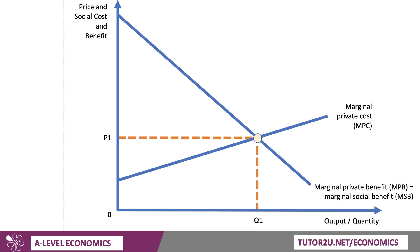Let's work through the diagram. You put price, cost and benefit on the y-axis, and output or quantity on the x-axis. If it's contextualised in the exam, make sure you label these things thoroughly and accurately. We're going to assume there's a demand curve — the marginal private benefit curve, MPB. We assume there are no externalities from consumption, so marginal private benefit also equals marginal social benefit, MSB. The marginal private cost, MPC, is the cost to the producer of the next unit produced. The free market reaches equilibrium where private benefit and cost are in balance, giving us output Q1.